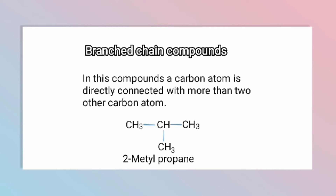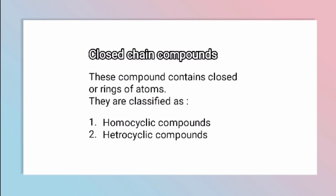For example, we have a propane structure drawn here. On the second carbon, we have a methyl group attached, which is called 2-methylpropane. Now let's talk about closed chain compounds, which form a closed ring structure.